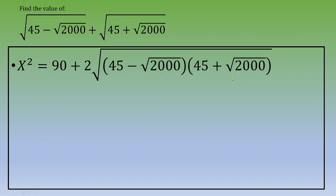If you look at the quantity below the root, you can notice this is a remarkable identity. This is a plus b times a minus b, which equals a² minus b².